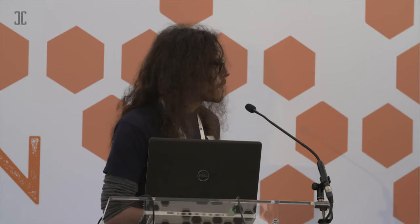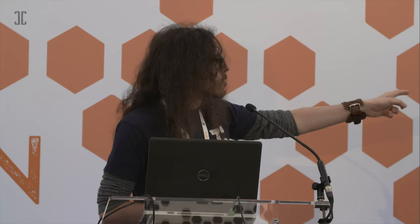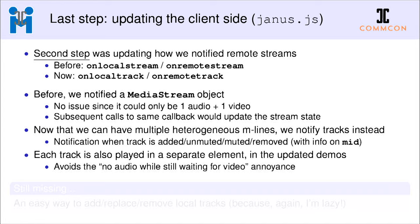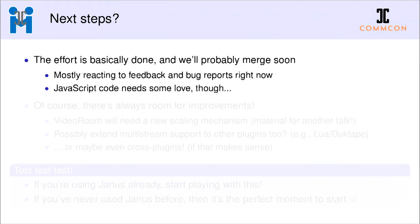We use the MID as a way to identify each track specifically from an application perspective — if I receive a remote track with MID 5, I look at the SDP and know exactly which stream it belongs to. Also, each track is now played in a separate element. Before, we'd play audio and video in the same video element, which could prevent audio from playing if video hadn't arrived yet. Using separate elements — an audio element for audio and a video element for video — they become independent contexts and everything works correctly.